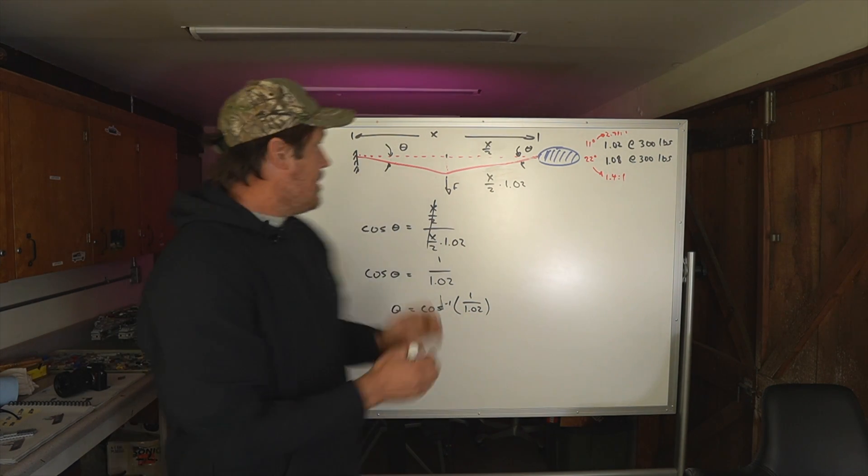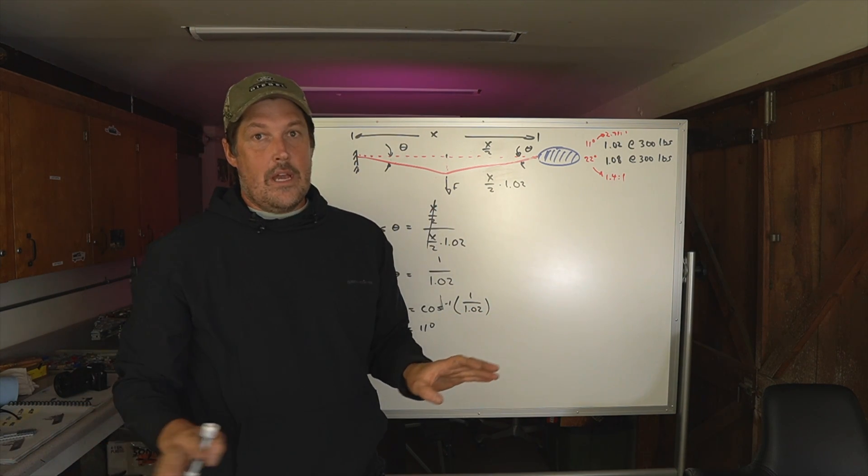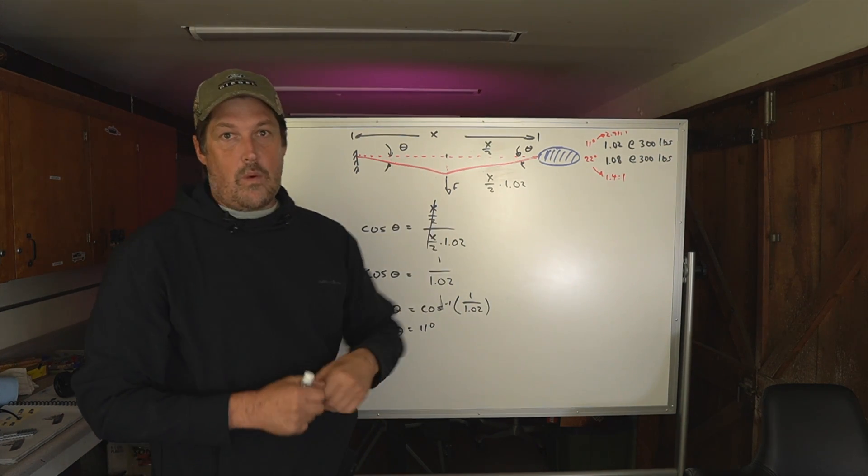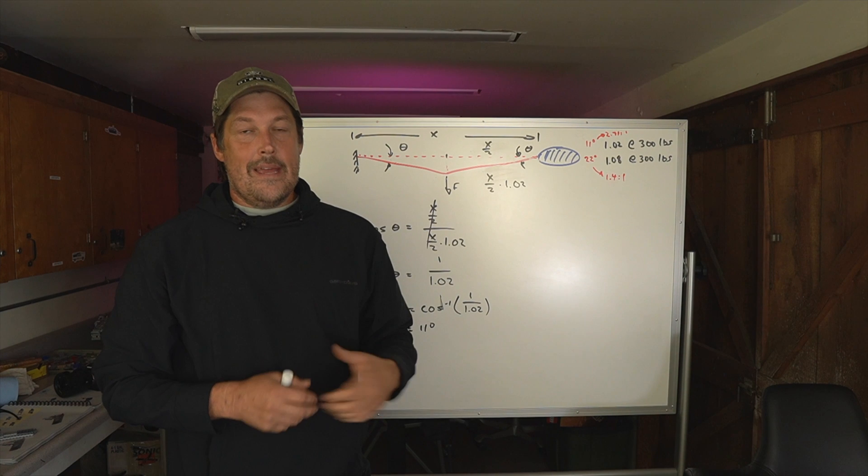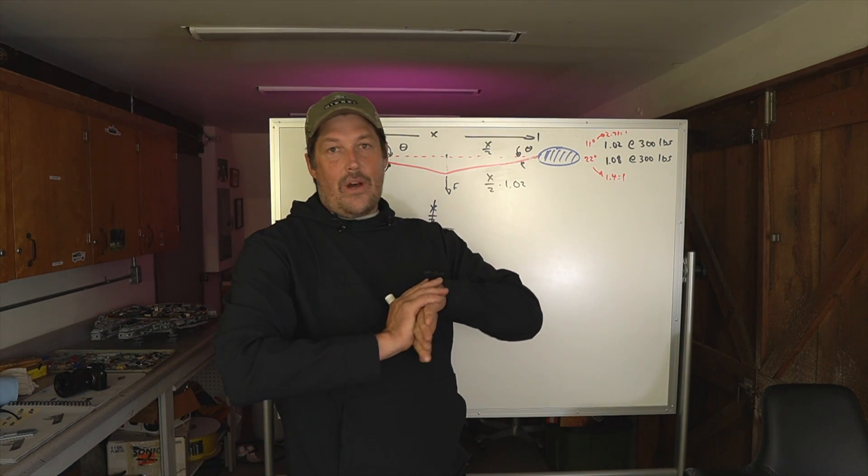Now, you can keep shortening the rope. There are techniques you can do to overcome this, but just a basic vector pull, you get to these angles pretty quick that become like 1.4 to 1, 1.3 to 1 that aren't really that effective. So that's some quick math on vector pulls.